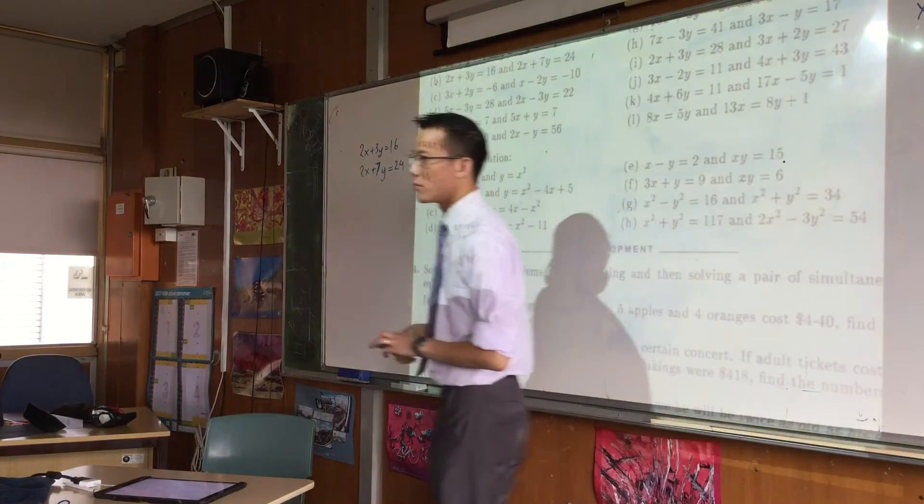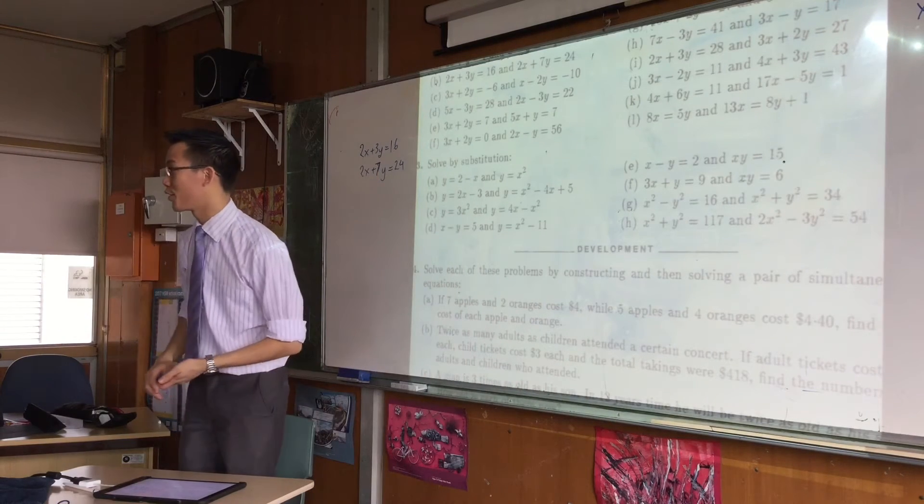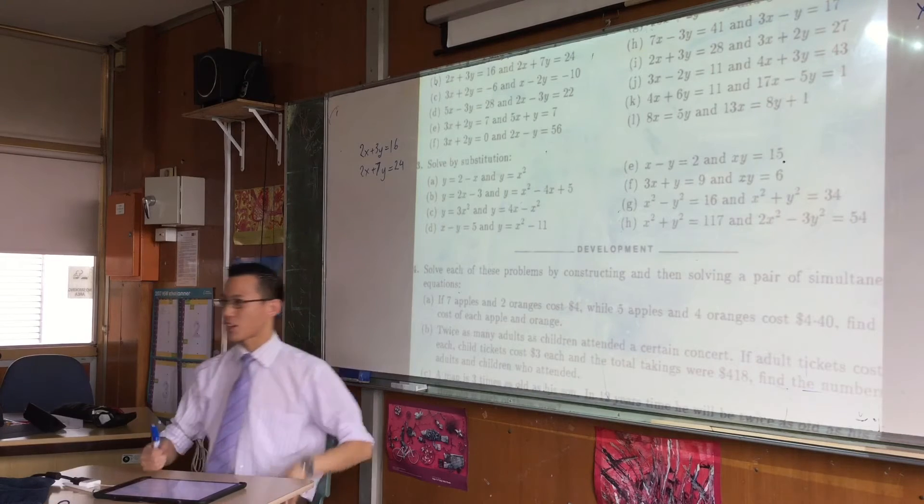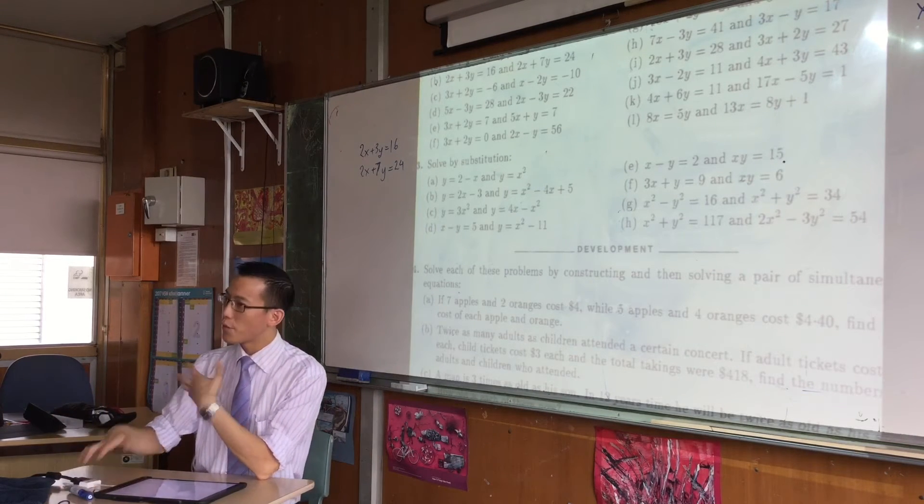Does anyone recognize it now? What is this? It has a name. What's it called? It's a hyperbola, very good. So a hyperbola is a curious shape, it's curved, it's not linear. So when we find points of intersection...